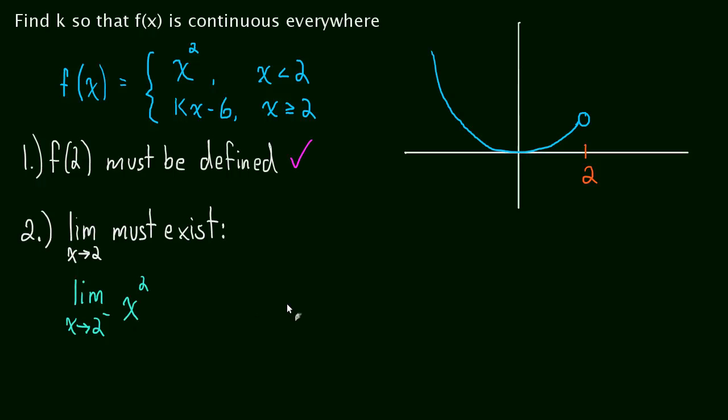And then the limit from the right-hand side. So, the limit as x approaches 2 from the right-hand side. And when we're coming from the right, well then, now we have the equation of the line. So, that's what we're going to use, kx minus 6. Now, these things have to be equal in order for this limit to exist. So, how are we going to force them to be equal?